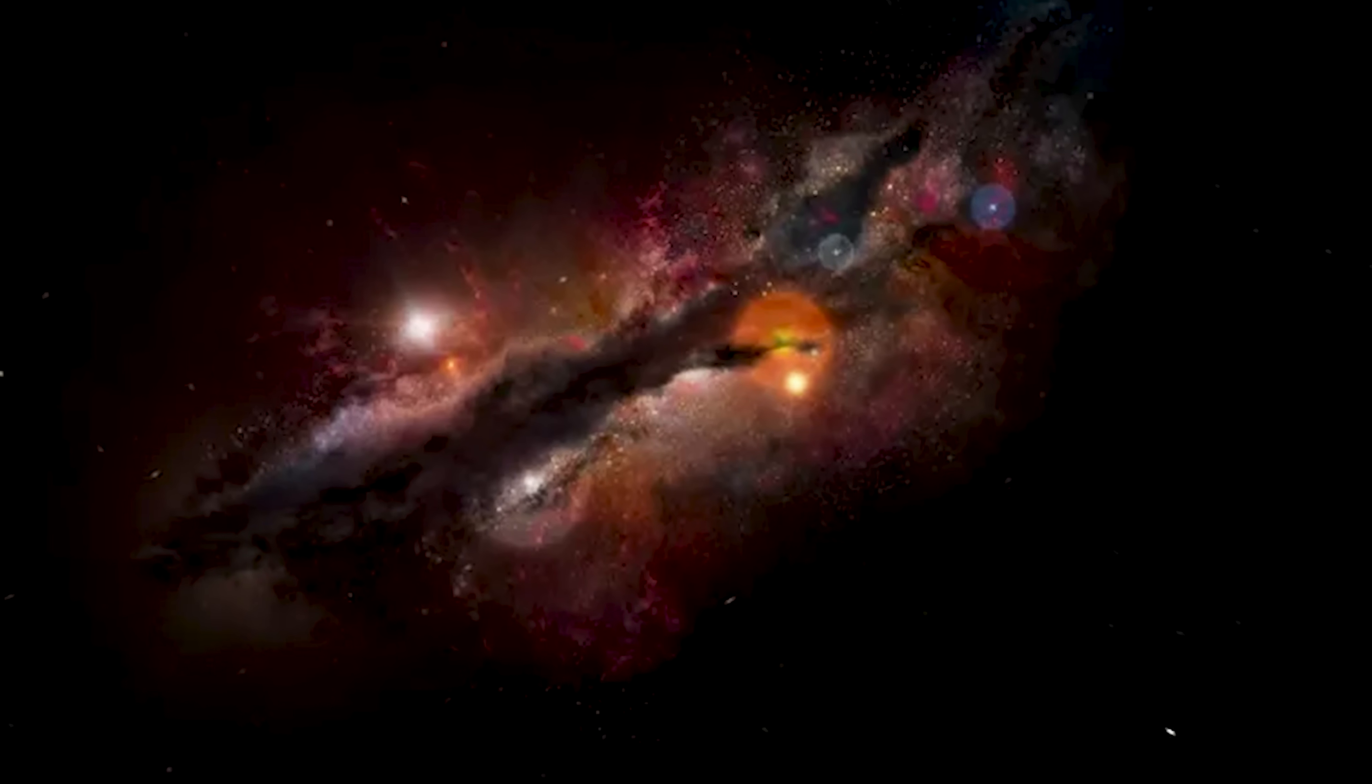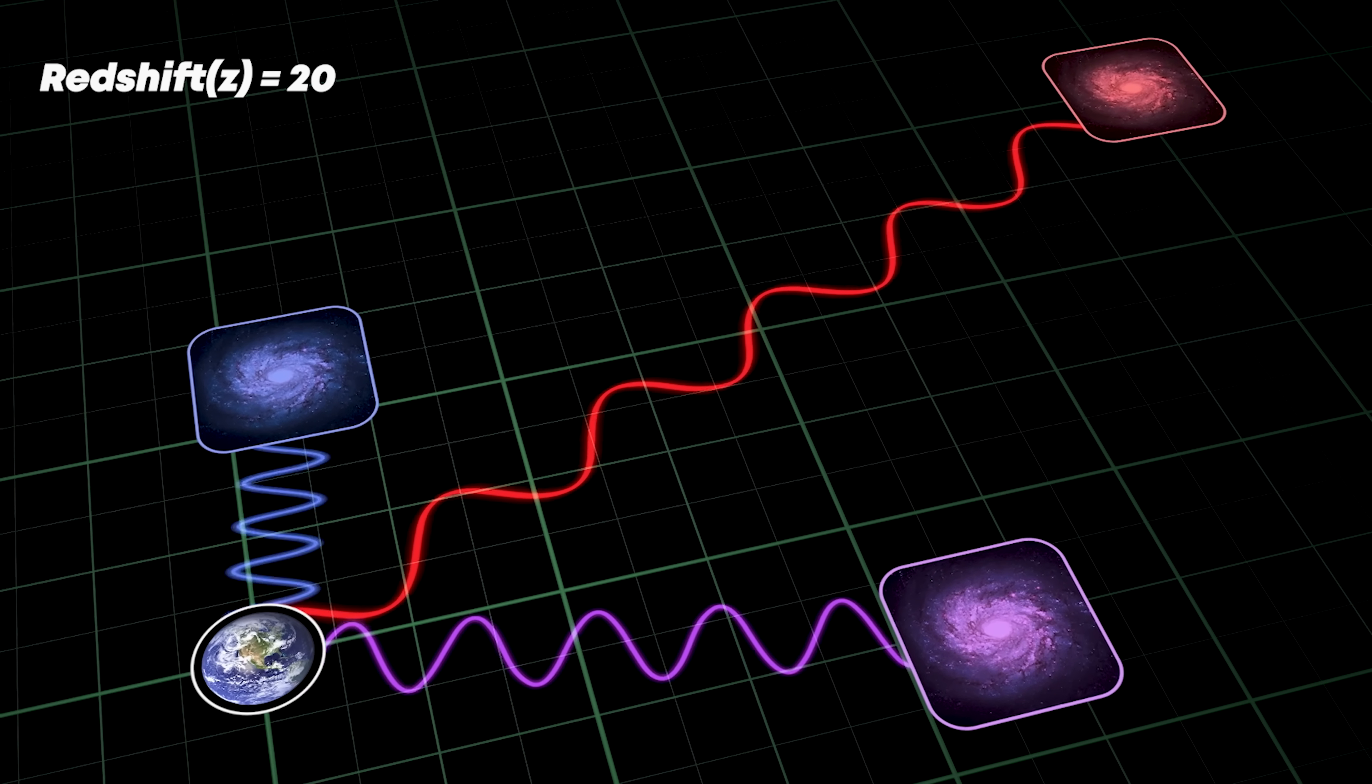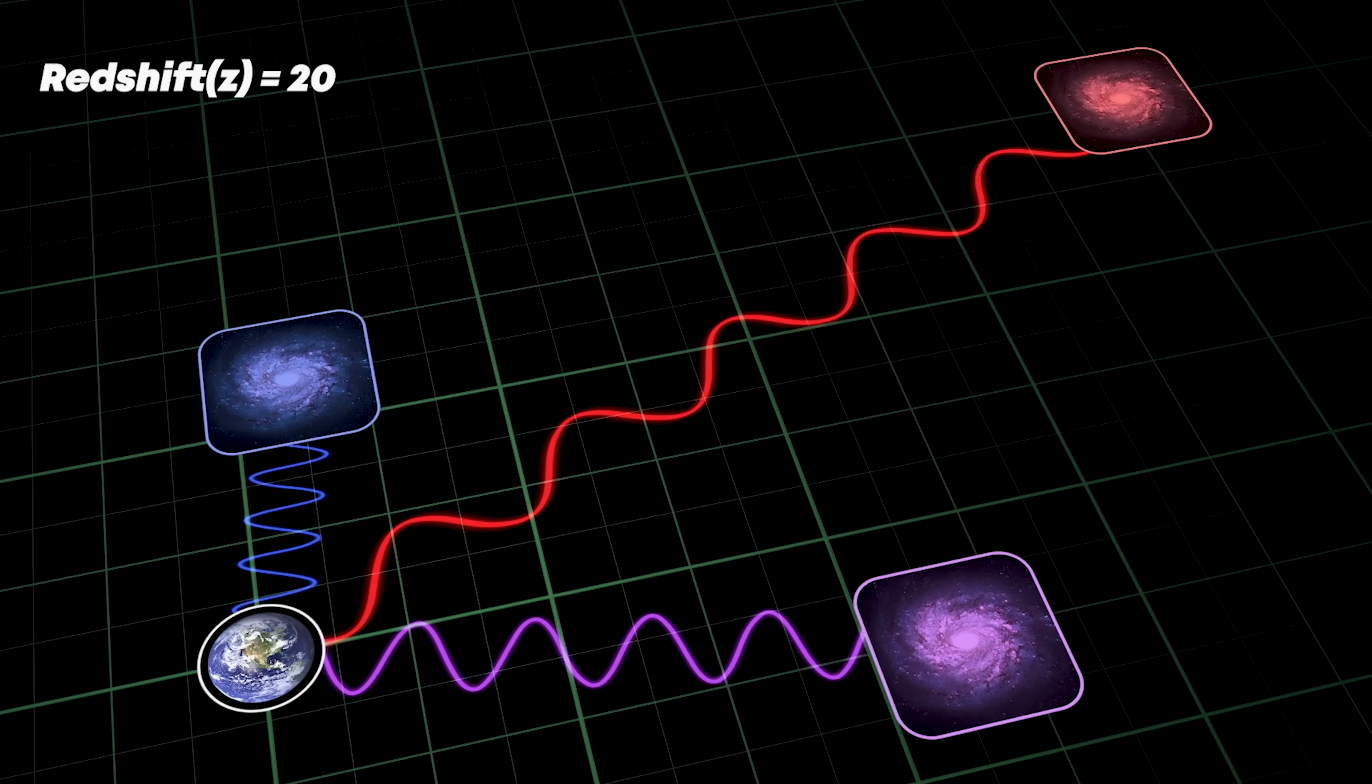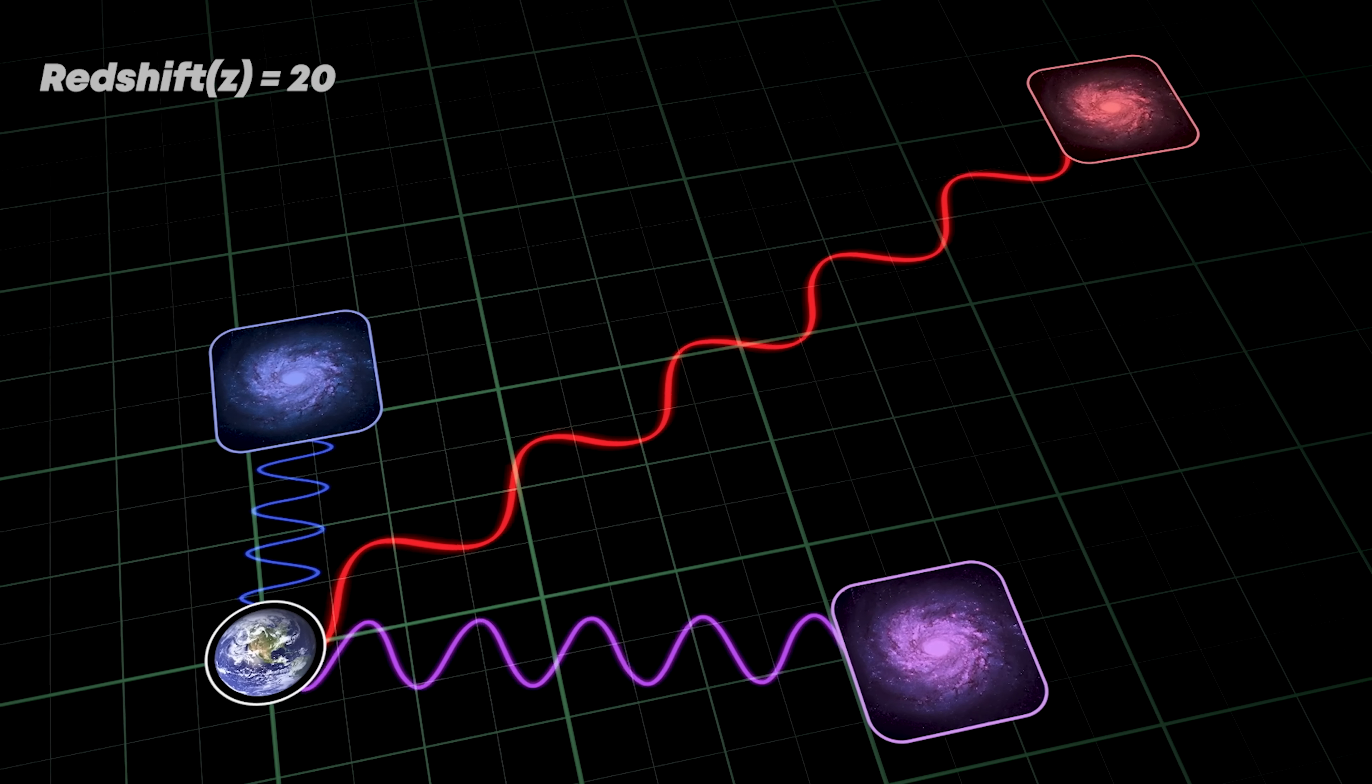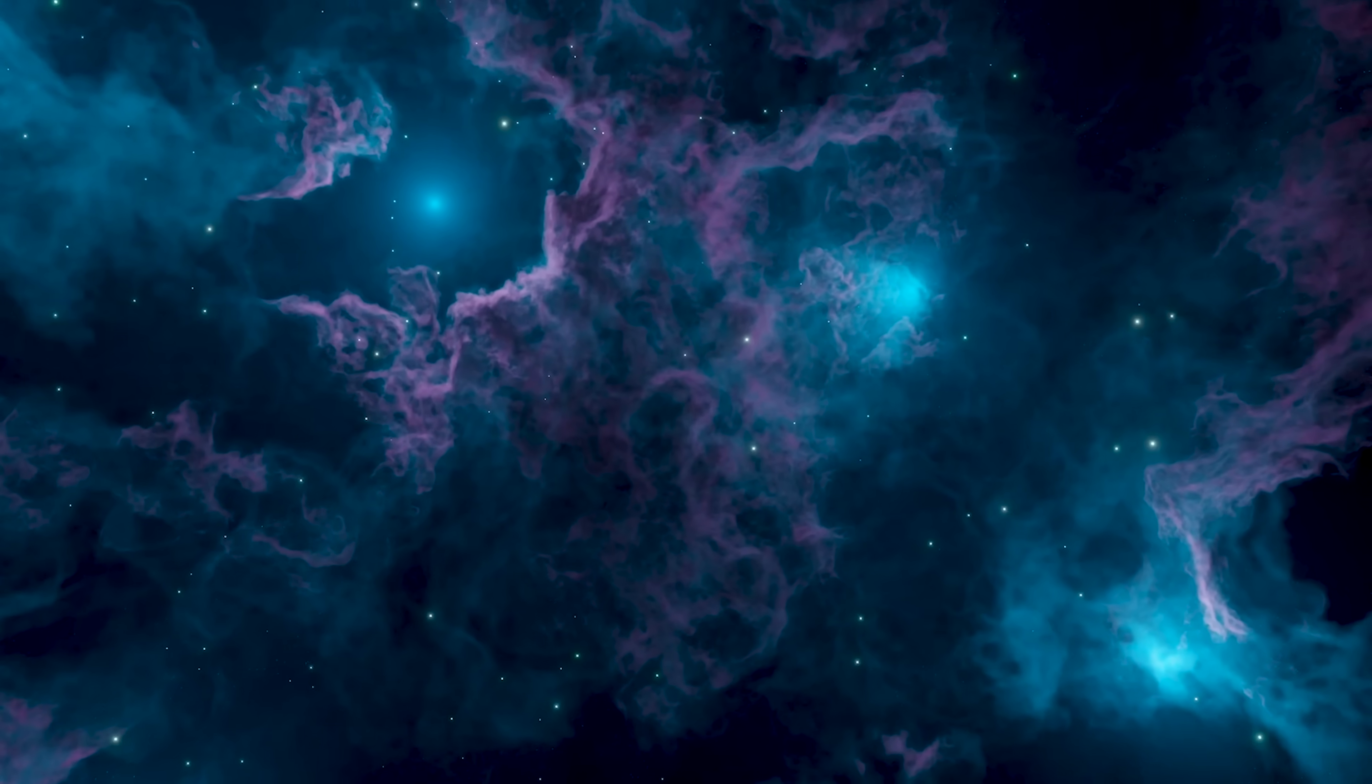And yet, this is just the beginning. Extreme redshifts, some as high as z-20, are revealing objects far older and more organized than anyone ever imagined, transforming our understanding of cosmic history.